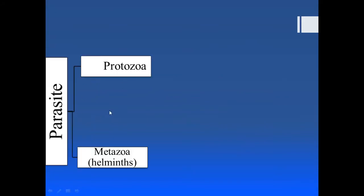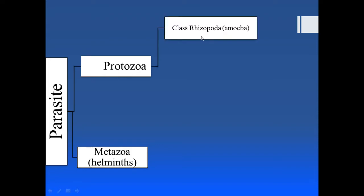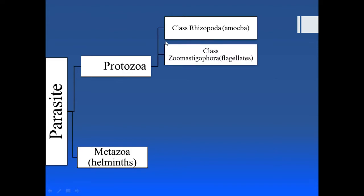We have divided the parasites into protozoa and metazoa on the basis of cellularity. If they are unicellular, we place them into the protozoa; if they are multicellular, into the metazoa. The unicellular protozoans are further divided on the basis of their organelle of locomotion into class Rhizopoda, which have pseudopodia.